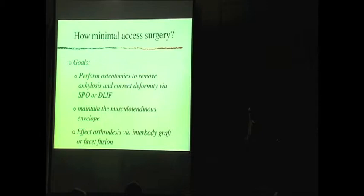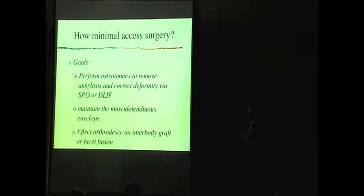Our goals are: if we want to correct a deformity, we use bony cuts called osteotomies to help loosen the spine. We maintain the envelope of muscles and tendons around the spine to keep it healthy and prevent degeneration. If we're doing a fusion, we do that via grafts in the disc space and really rely on that rather than putting a lot of bone on the back and sides of the spine — we try to really enhance the fusion at the disc space.